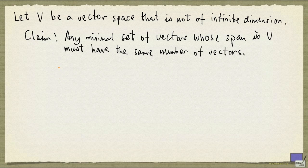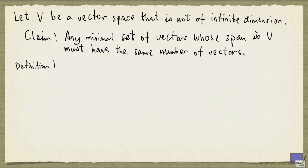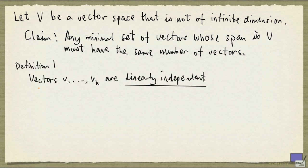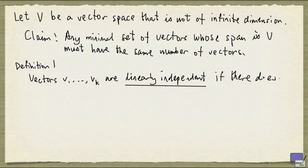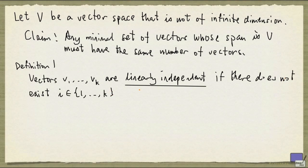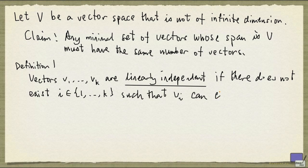There are actually two equivalent ways of defining linear independence of vectors, and we are going to look at both of them. The first definition says the following: vectors V1 up to Vk are linearly independent if there does not exist an index i from 1 up to k, such that Vi can be written as a linear combination of the remaining vectors.